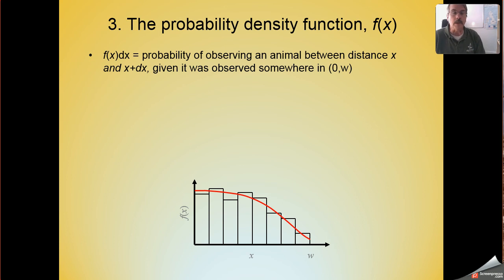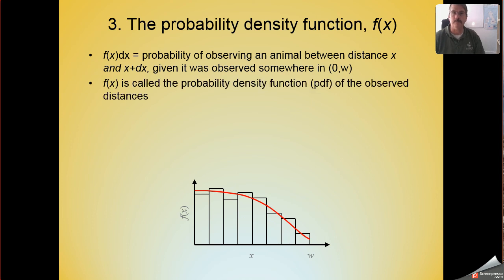The definition of the probability density function is the probability of observing an animal in some interval between 0 and w, given that it was observed some place between 0 and w. So if I tell you I saw an animal in my strip somewhere between 0 and w, if you were armed with this probability density function f(x), you could then calculate what the probability was that that animal was between 1 and 2 meters or 2 and 4 meters or 6 and 8 meters.